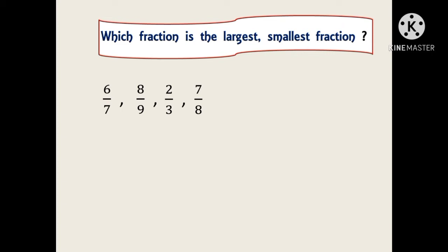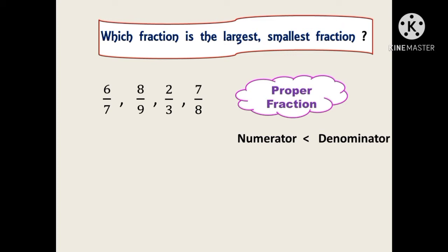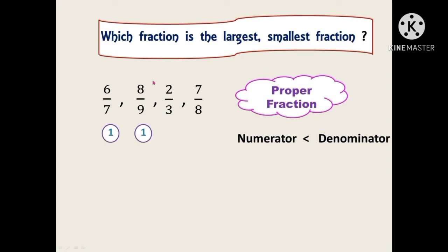First, we are supposed to find what type of fractions these numbers are — proper or improper. These numbers are proper fractions because a proper fraction must satisfy the condition that the numerator is less than the denominator. In every fraction here, all numerators are less than the denominator. For example, 6 is less than 7, 8 is less than 9, 2 is less than 3, and 7 is less than 8. Second, we find the difference between the numerator and the denominator. Every number here has the same difference of 1.